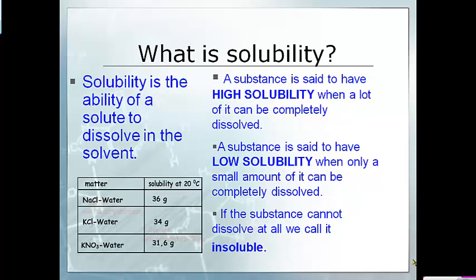There is a term called solubility. Solubility is the ability to dissolve a solute in a solvent — the ability to dissolve something in something else. If a substance has high solubility, that means you can dissolve a whole lot of it in the solvent. If a substance has low solubility, it means you can only dissolve a little bit of it. And if a substance cannot be dissolved at all, we call it insoluble — the prefix 'in' stands for 'not,' so not soluble.